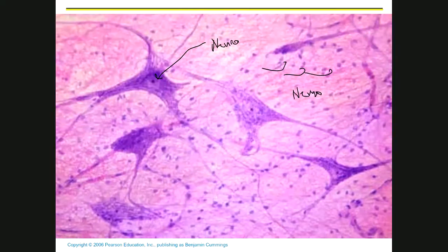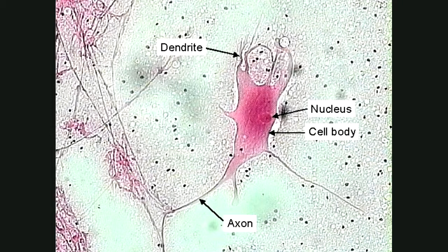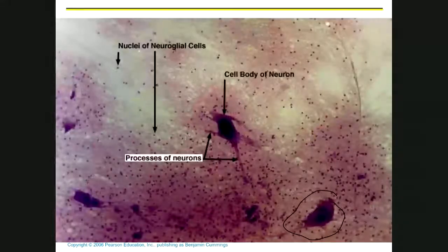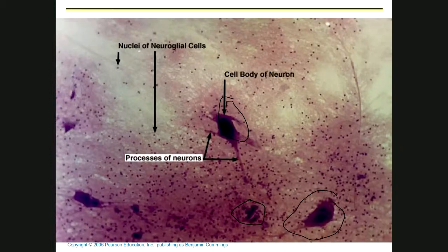There's only one nervous tissue, so that also makes it really easy. Any questions about nervous tissue? Can everybody pick out the neurons and the neuroglia?